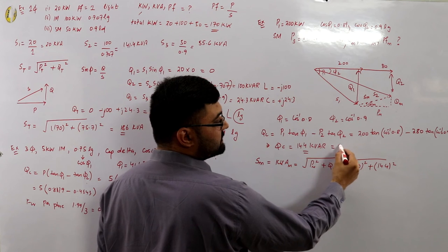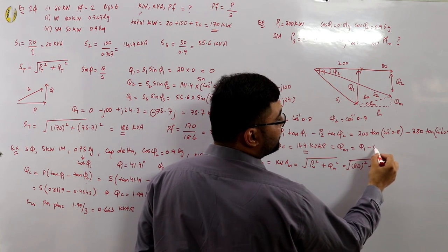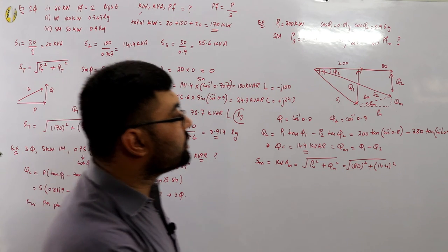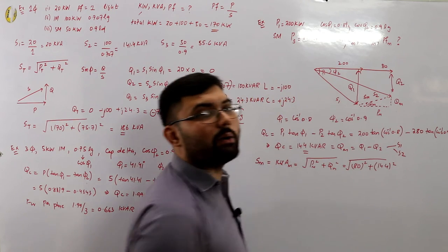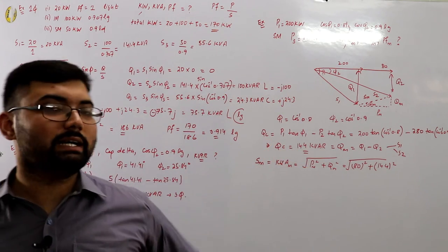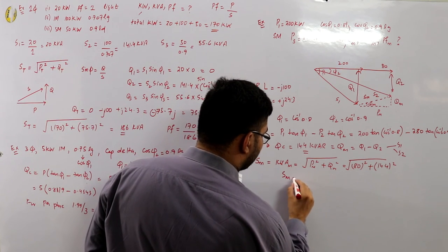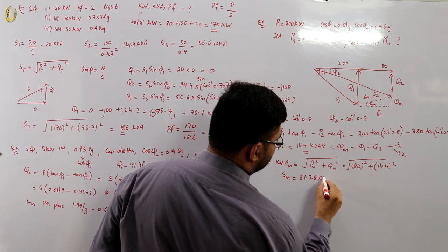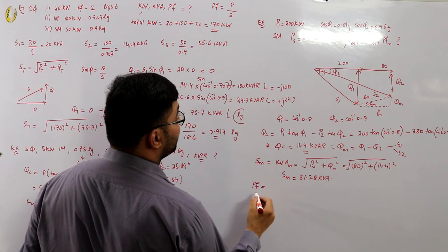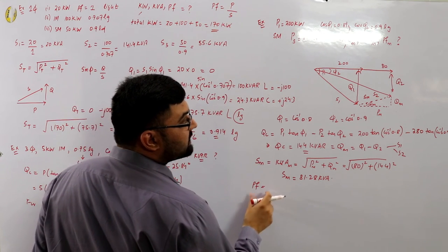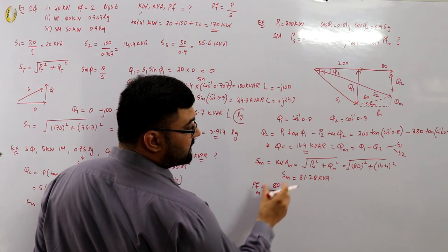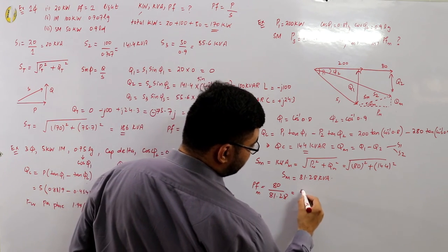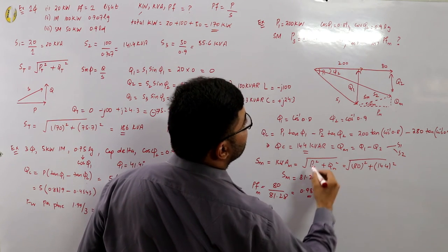S_M = √(80² + 14.4²) = 81.28 KVA. The power factor of the synchronous motor is P_M/S_M = 80/81.28 = 0.984 leading. This alternative approach directly uses the formula Qc = P₁·tan(φ₁) − P₂·tan(φ₂), which is more straightforward than the method used in the previous video.